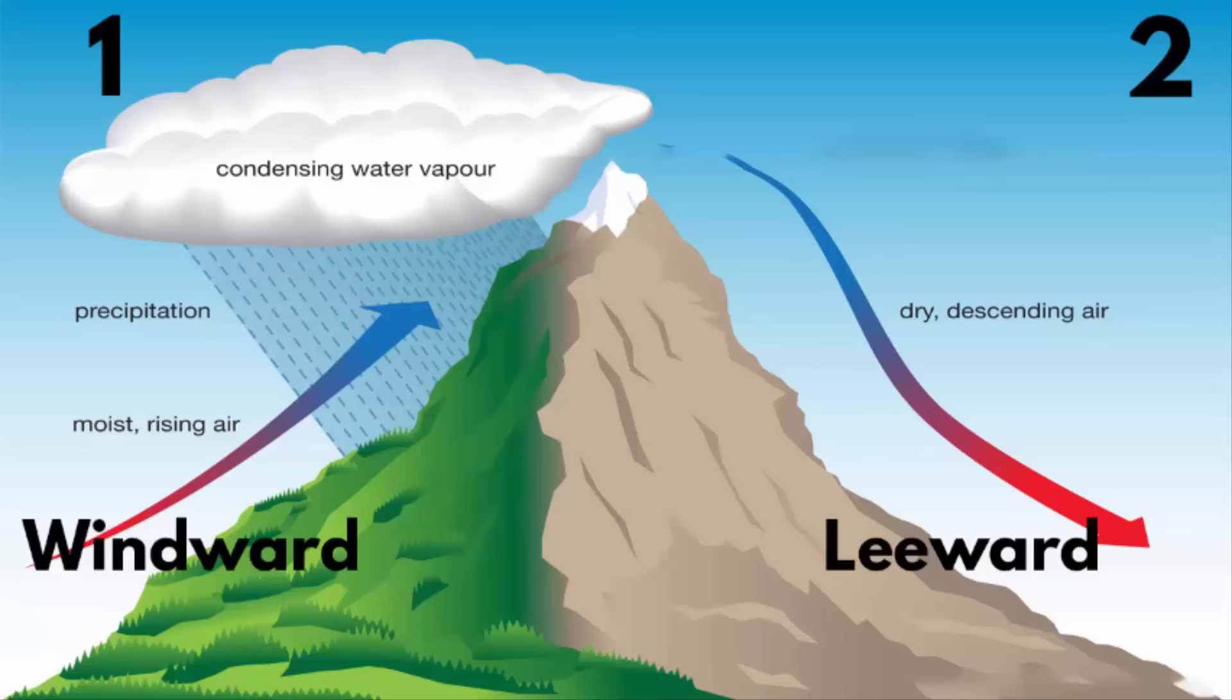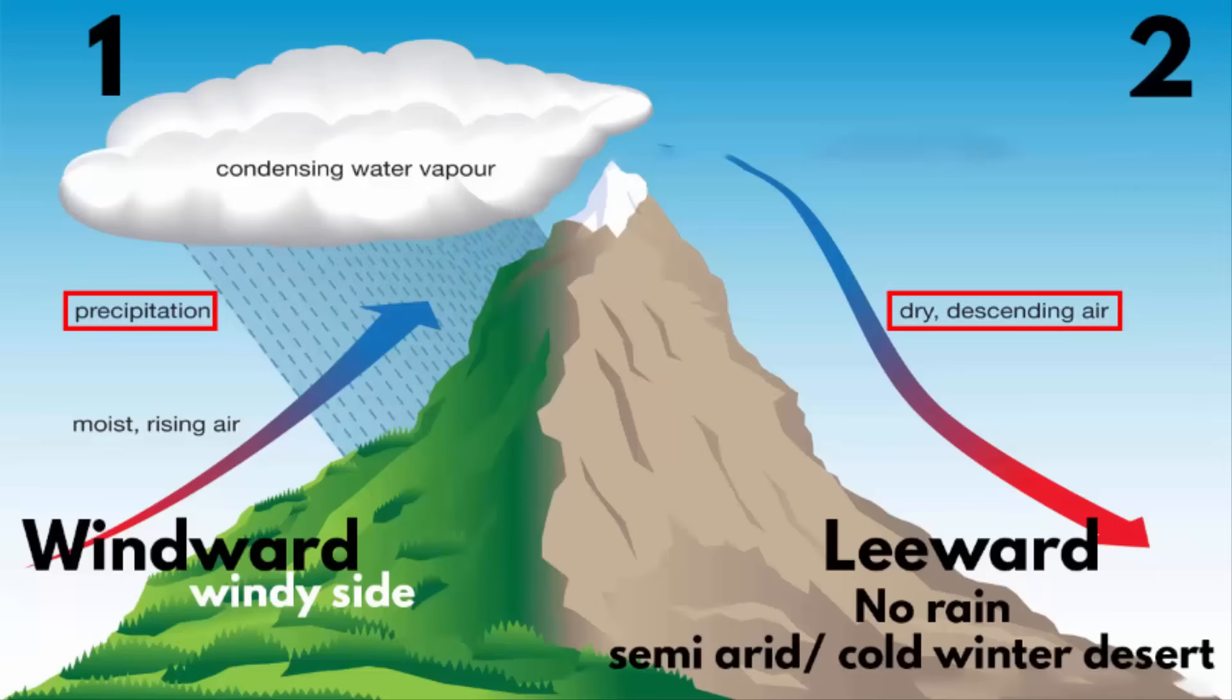Windward means the side of the mountain which faces a lot of wind. As a result, this side of the mountain faces a lot of rainfall. And the leeward side is the opposite side, where it is dry, and there is no wind. That means there is very little rainfall.